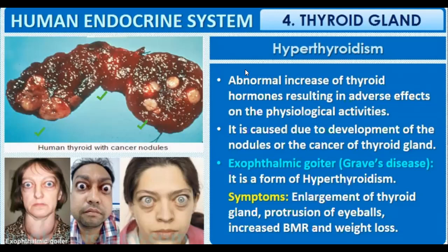Hyperthyroidism is an abnormal increase of thyroid hormones resulting in adverse effects on physiological activities. It is caused by development of nodules and cancer of the thyroid gland. One type is exophthalmic goiter, also called Graves' disease.